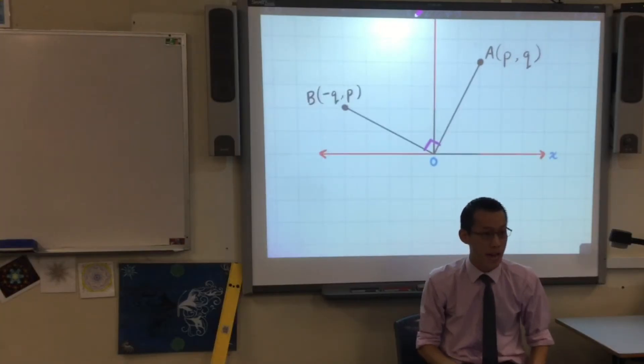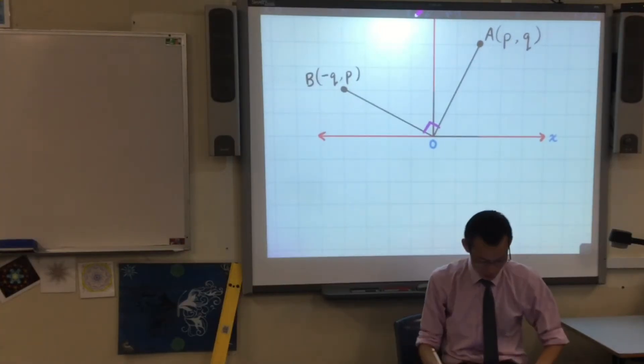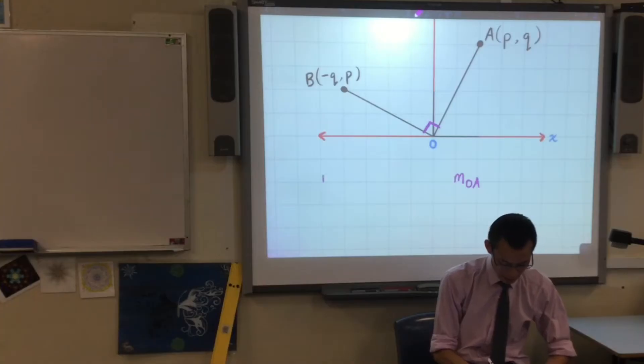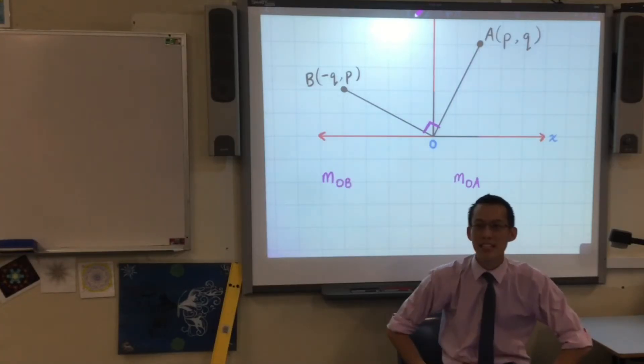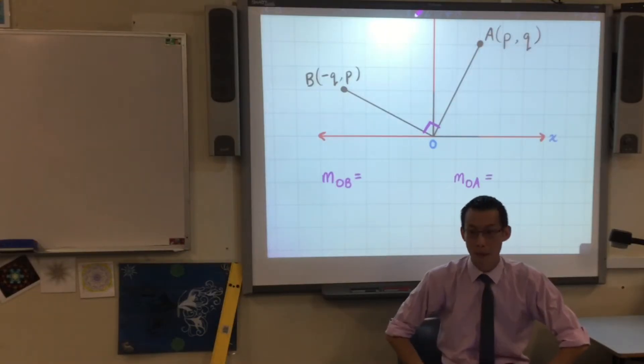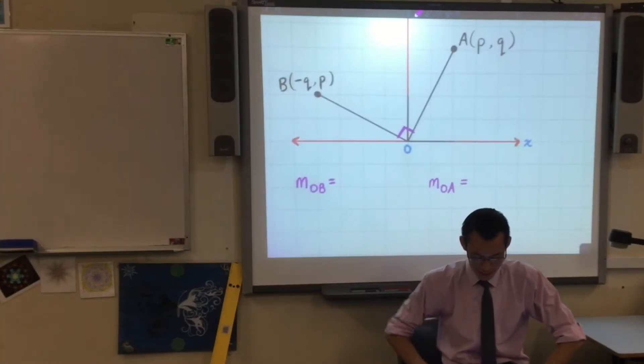Underneath where you've drawn this diagram, we're going to work out each of these gradients. We're going to work out the gradient of OA, that's the original interval. And then we're going to work out the gradient of OB, that's the one we got by rotation. Now remember, it's just rise over run.